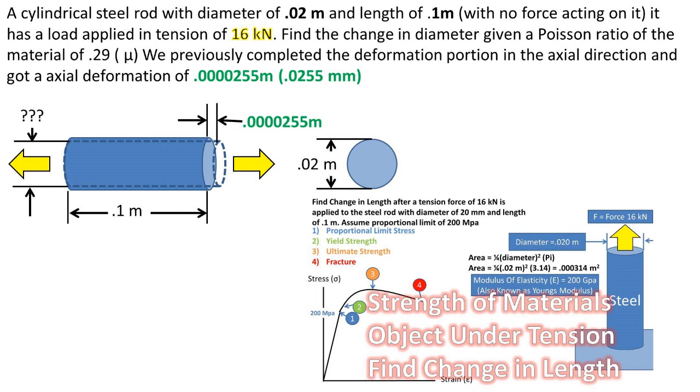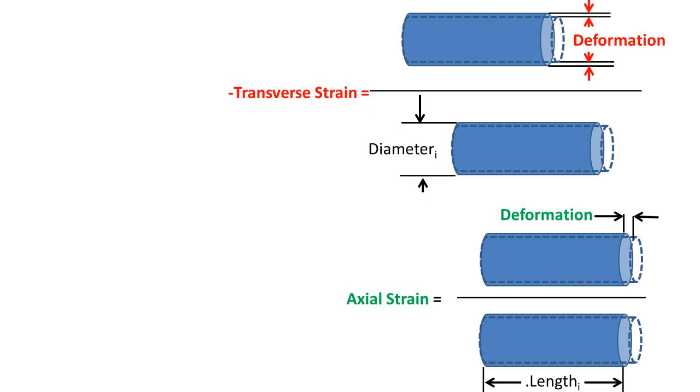We also found out that it was within the proportional limit, so Hooke's laws apply, and the Poisson ratio formula we will be using will apply as well. To better understand what the Poisson ratio is, we must first understand what strain is.